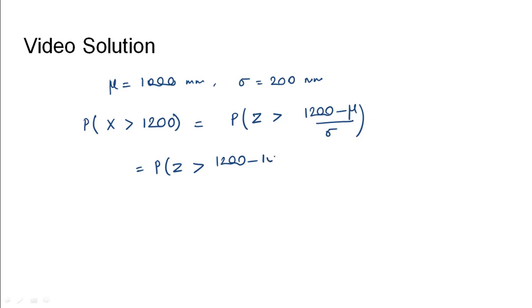In this case, we have been given the mean as 1000 millimeter and the standard deviation as 200 millimeter. What is the probability that the random variable has a value greater than 1200? Converting the value of X to Z, we get Z greater than (1200 minus μ) divided by σ. This would be probability of Z greater than (1200 minus 1000) divided by 200, which is probability of Z greater than 1.